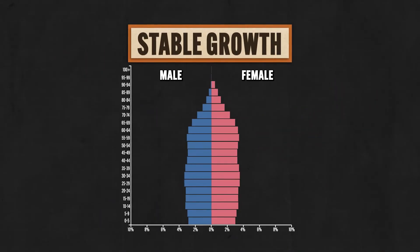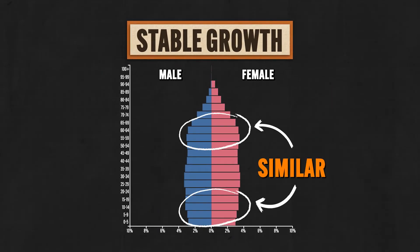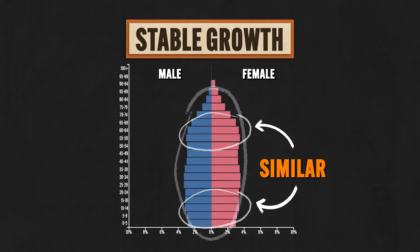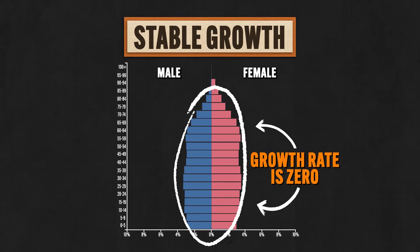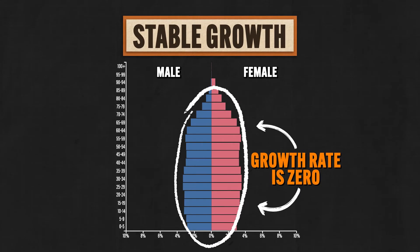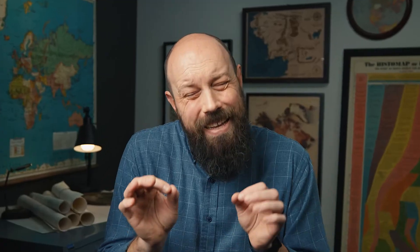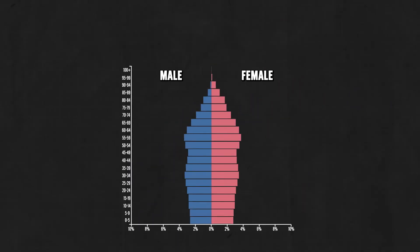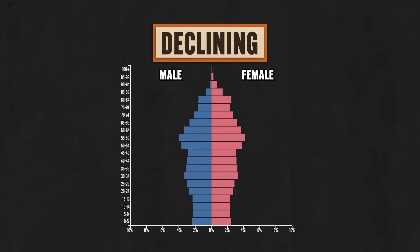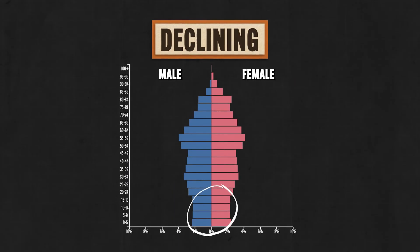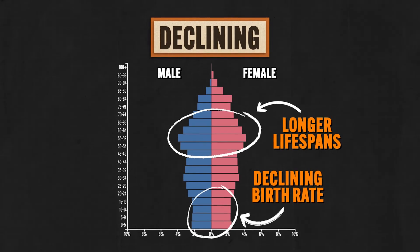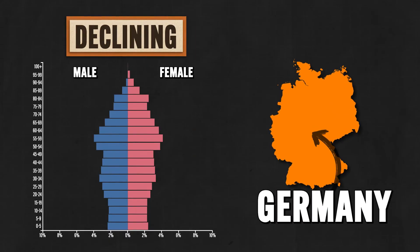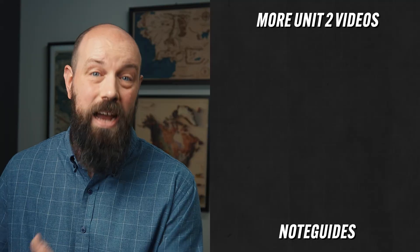Then this shape represents a stable growth population. Here, the birth and death rates are similar, and there is roughly an even distribution throughout the different age ranges, meaning the growth rate is zero or close to zero. A good example is the United States — the population is growing, but barely. And finally, you've got the declining population — the base is narrower than the top, meaning the birth rate is declining while people are living longer. A good example is Germany, and countries like this face challenges like labor shortages, because not as many people are working as there are retiring.